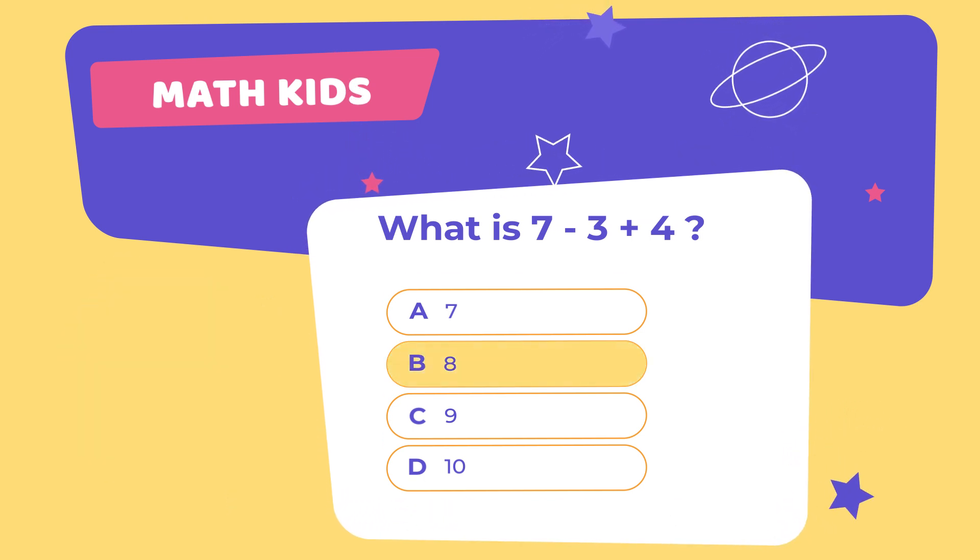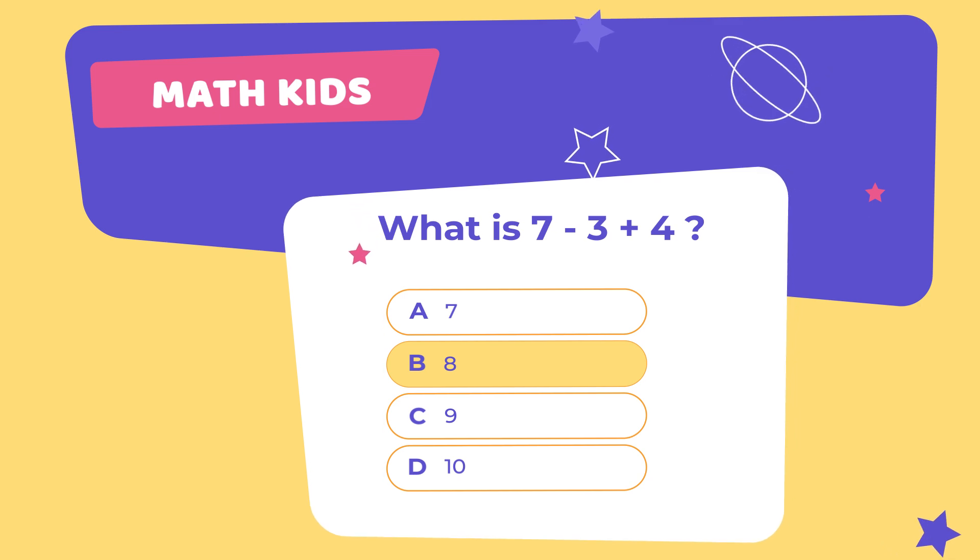You're right! Your answer is correct! Jack has 7 stars, but he loses 3, leaving him with 4 stars. Then, he finds 4 more stars. How many stars does Jack have now? Let's count together. 1, 2, 3, 4, 5, 6, 7, 8. Yes! Jack has 8 stars.